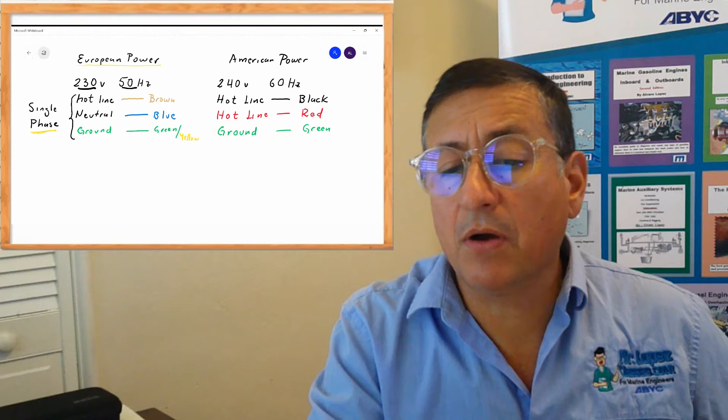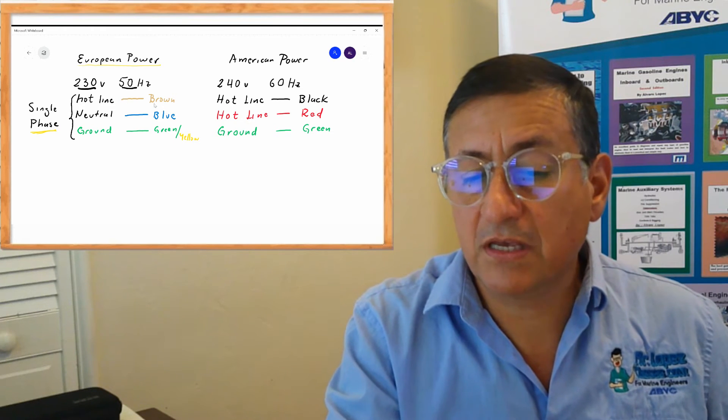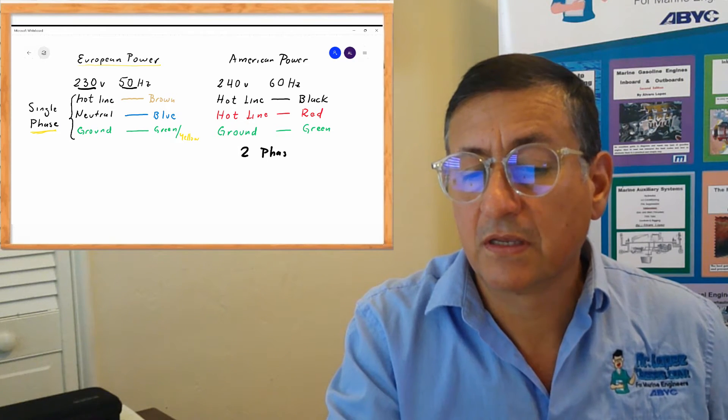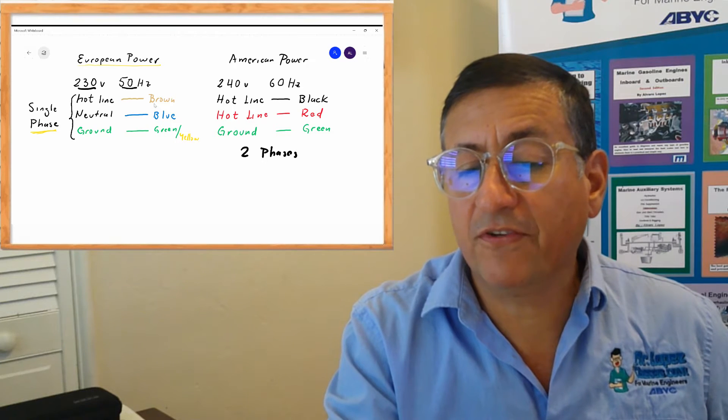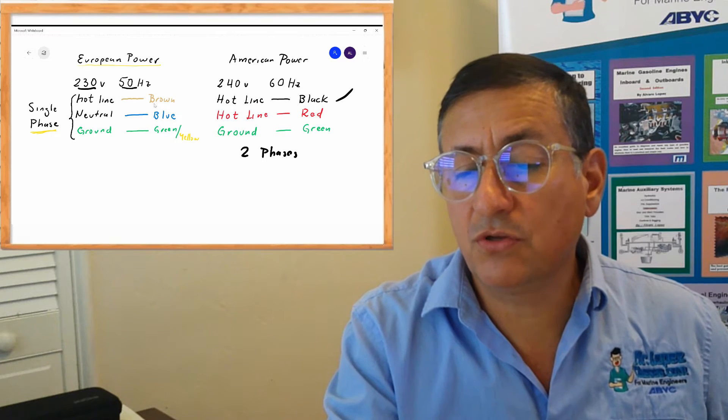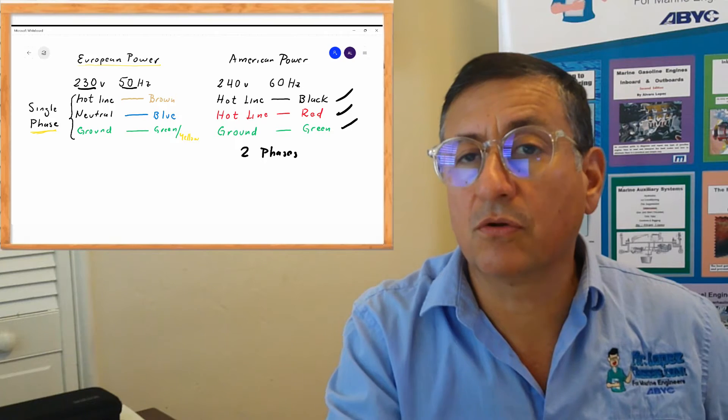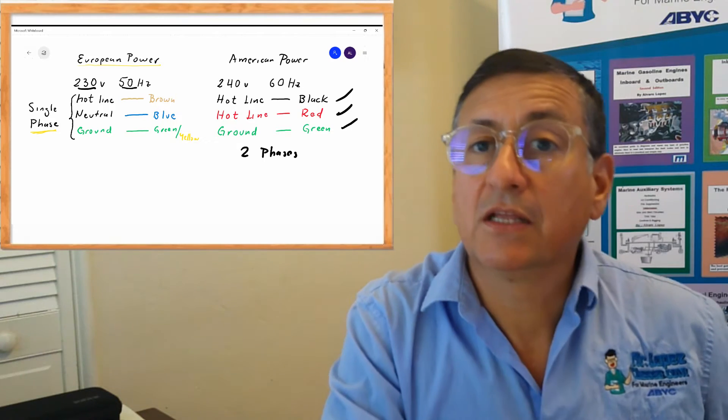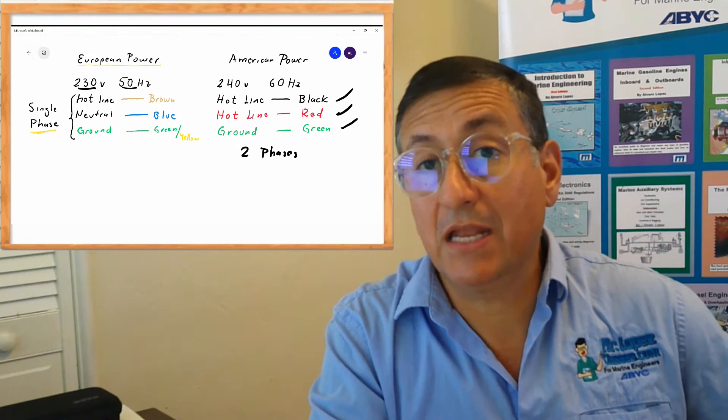In American power, it's double phase, two phases. You have phase one, black color, phase two, red color, and the ground, green color, 240 volts, 60 hertz in American power.